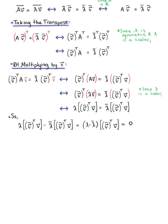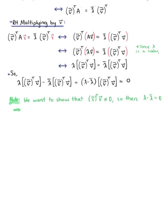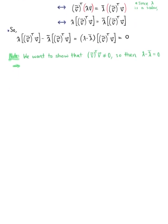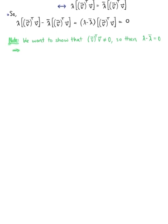This brings us to a pivotal point of our proof. We now want to show that the dot product of v-bar-transpose with v cannot be equal to zero, which will then imply that lambda minus lambda-bar equals zero, and thus lambda equals lambda-bar, and so lambda is real.